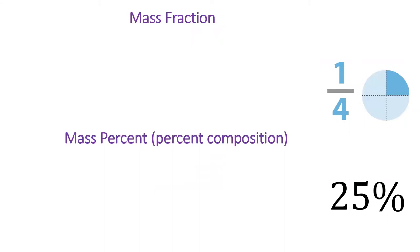Chemists have a similar way to express how much of a compound is made of a specific element. Actually, chemists have two ways to express this, called mass fraction and mass percent.